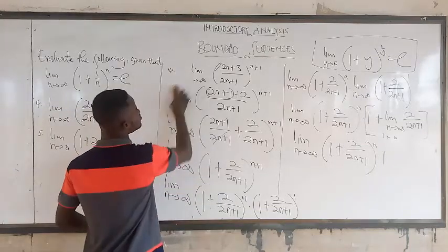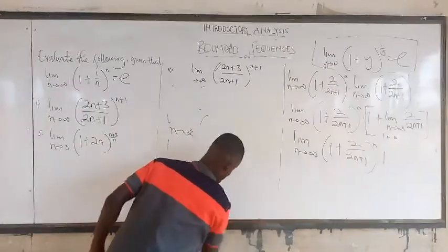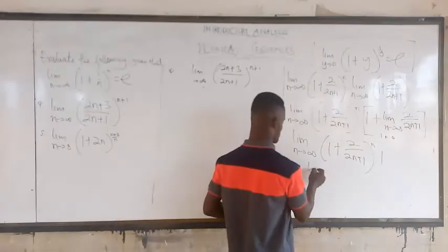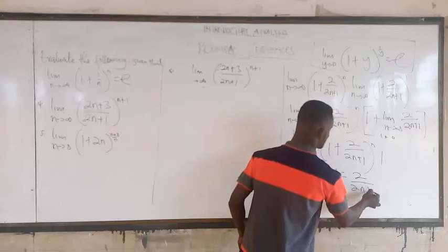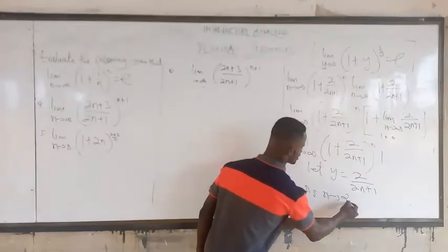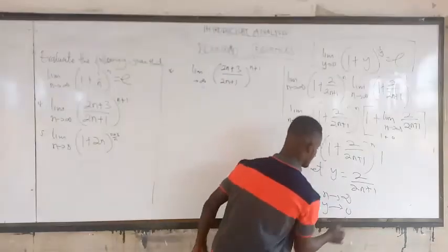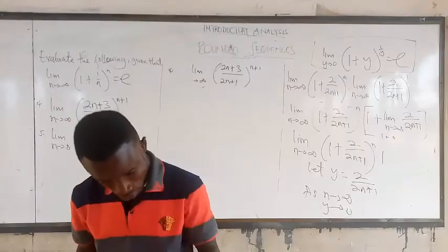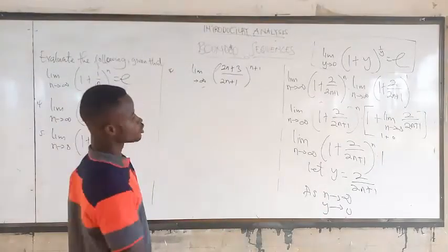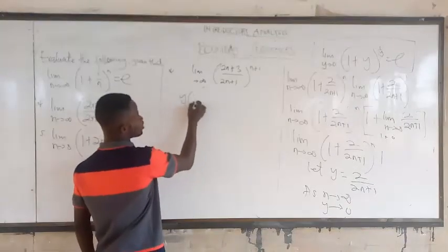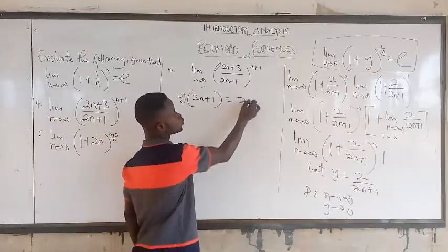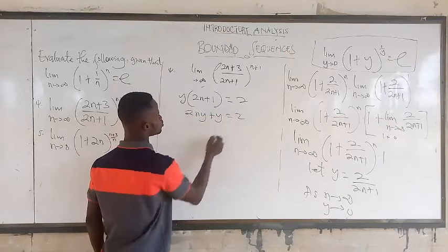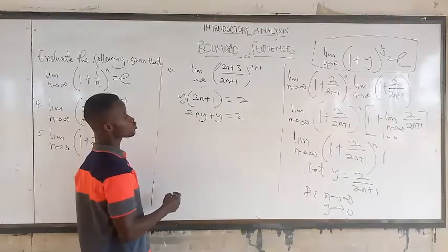Now here, we can let y equal to 2/(2n+1). As n approaches infinity, y approaches 0. Then we make n the subject. Making n the subject: by cross multiplication, y(2n+1) = 2, so 2ny + y = 2.